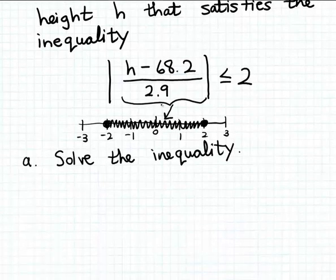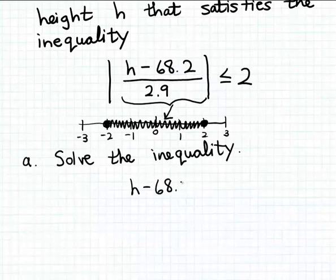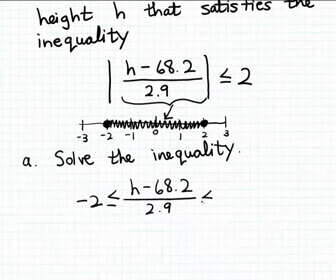That observation allows us to solve this absolute value inequality for h. We can take the fact that h minus 68.2 over 2.9 has to fall between minus 2 and 2, and rewrite that as a compound inequality: h minus 68.2 divided by 2.9 has to be greater than or equal to minus 2, and at the same time less than or equal to positive 2. We can then use our knowledge of solving compound inequalities to find h.